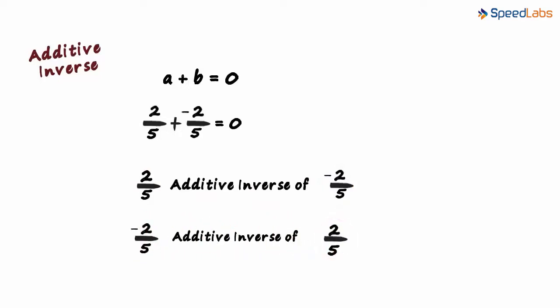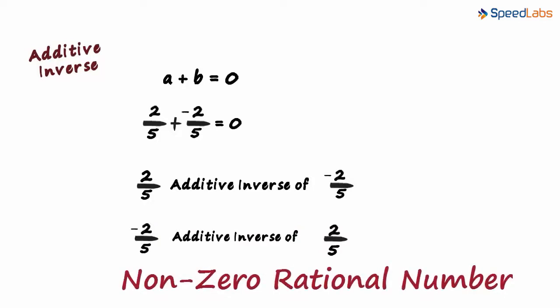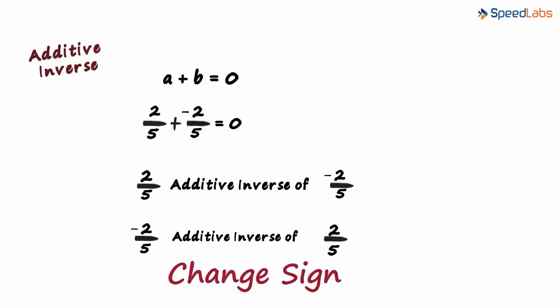So if we are asked the additive inverse of a nonzero rational number, all we have to do is change its sign. Additive because of the plus sign here, and inverse since the sign is changed.